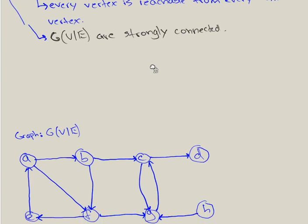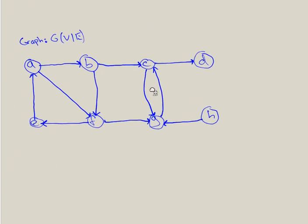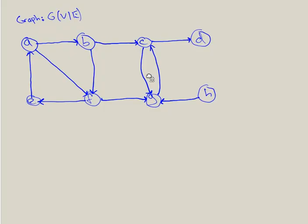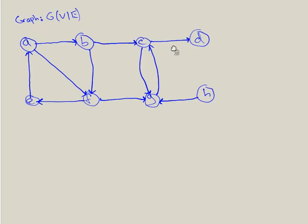Here's a directed graph we're given. How do you approach a strongly connected components problem? Well, if you're given a graph like this, you do a DFS on it. The way I like to approach this problem is a little different — I like to do a DFS on the transpose of the graph first.